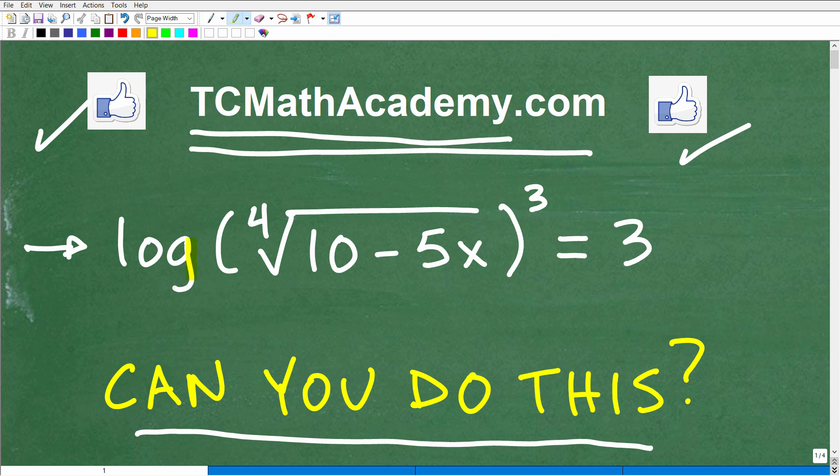So here is the equation. We have log, and then we have parentheses, and this is the fourth root of 10 minus 5x. All of this to the third power is equal to 3. So it seems rather complex. So we're looking to figure out what x is equal to. We want to solve this equation. So what is x equal to?